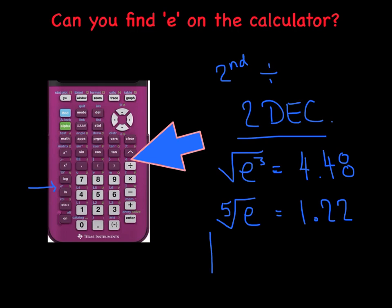Let's try the absolute value of 2 times E, all divided by 5, and then subtract 10 from that, and close the absolute values. Did you remember where the absolute values are? Hit the math button and go over to the right one menu — you'll see the absolute values waiting there. I got 8.91 on my calculator. I just want you to be really comfortable evaluating different expressions that involve E using your calculator.